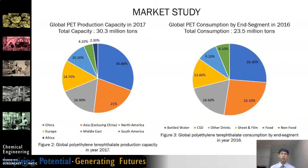Now let's look at the market study. In 2017, a total capacity of 30.3 million tons of PET were produced globally, with China being the largest PET producer, accounting for 30.8% of global PET production. In 2016, global PET consumption totaled around 23.5 million tons. As shown in the pie chart, more than 70% is used for drinking water applications such as bottled water, carbonated soft drinks, and other drinks.